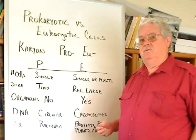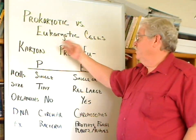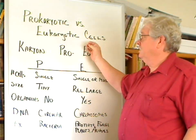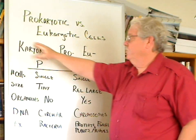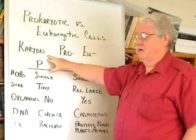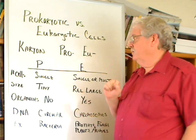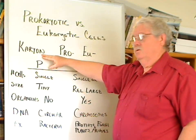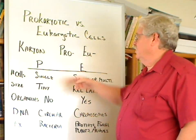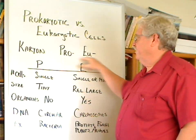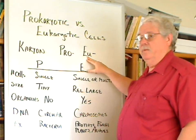We'll take a couple of minutes to discuss the difference between prokaryotic and eukaryotic cells. First off, let's look at the names. The root word, karyon, is Latin for kernel, like the kernel inside a nut. And this refers to a nucleus, an internal nucleus that's compartmentalized. The prefixes pro and eu — pro means before and eu means true.